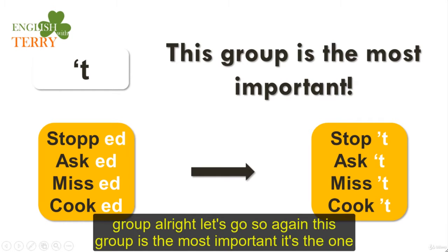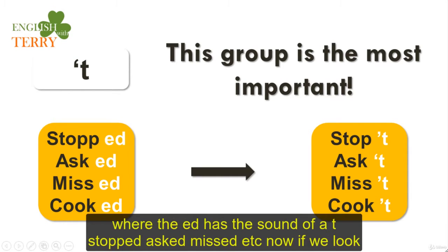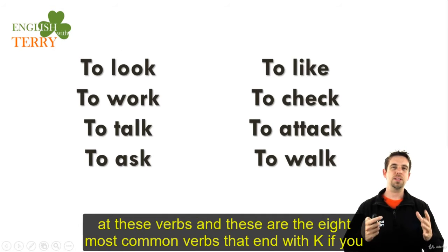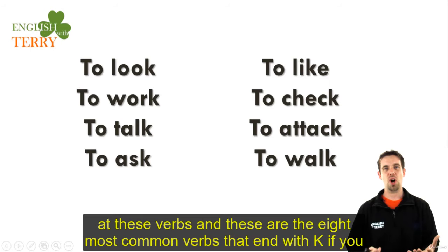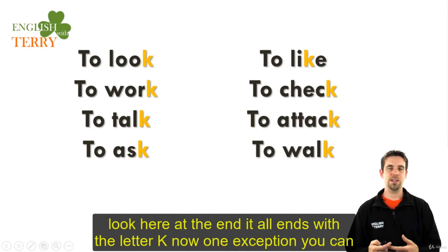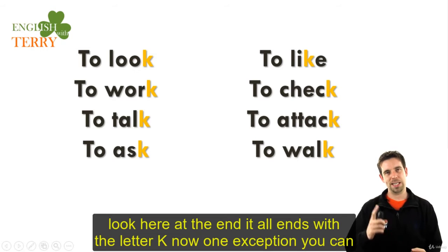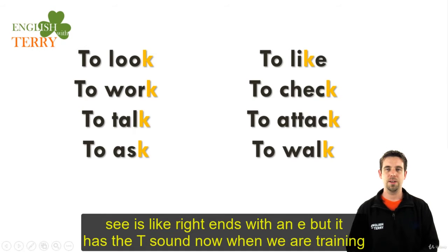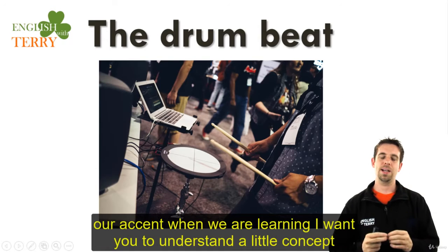This group is the most important — it's the one where the ED has the sound of a T: stopped, asked, missed, etc. Now if we look at these verbs — and these are the eight most common verbs that end with K — at the end they all end with the letter K. One exception you can see is 'like,' which ends with an E, but it still has the T sound.